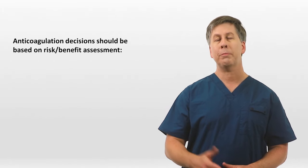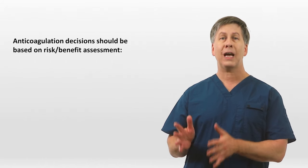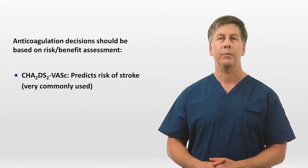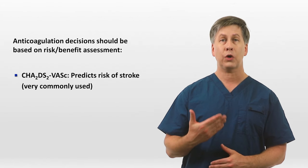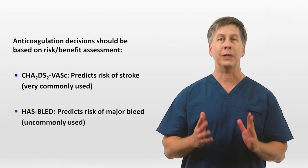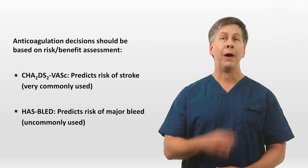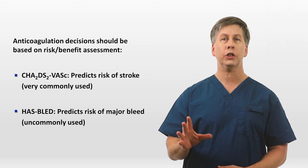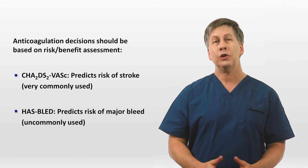After rate control, the next question in acute AFib to consider is the patient's anticoagulation plan, which consists of two separate questions: does the patient need anticoagulation, and if so, which anticoagulant is most appropriate? As with all decisions in medicine, anticoagulation decisions should be based on a risk-benefit assessment. The benefit from anticoagulation can be estimated from a clinical prediction rule called the CHADS-VASC score, which predicts the risk of stroke. The potential harm can be estimated from the HAS-BLED score, which predicts the risk of a major bleed — though in my experience the HAS-BLED score is not widely used or accepted, so let's focus on the CHADS-VASC score.